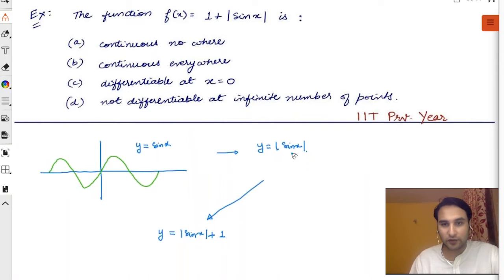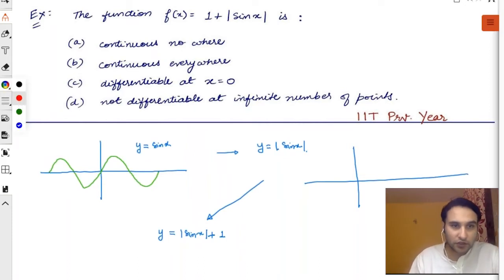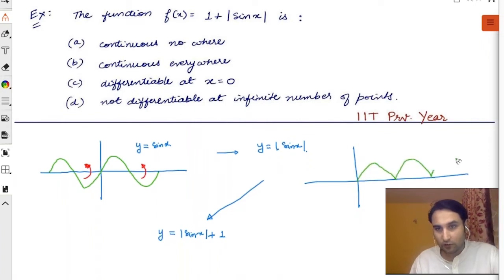What will happen when you do y is equal to mod sine x? All these portions of the graph will have jumped up. So how will your graph look like? Your graph will look like zero to π, π to 2π, 2π to 3π, minus π, whatever. What happened? The negative portions of the graph have jumped up.